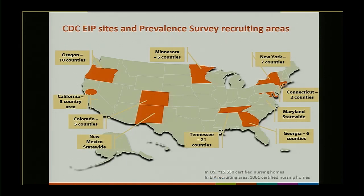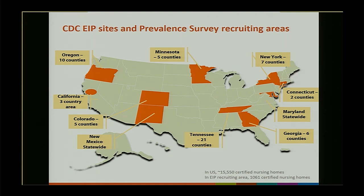Here are the CDC Emerging Infections Program sites, shown in orange as the prevalence survey recruiting areas. One strength of this work through EIP is the wide geographic variation in nursing homes available to participate. In some sites — Maryland and New Mexico — all nursing homes within those sites were eligible. In other states, it was a select number of counties. Overall, the U.S. has about 15,000 to 15,600 certified nursing homes; within these 10 areas, just over 1,000 certified nursing homes were eligible to participate.